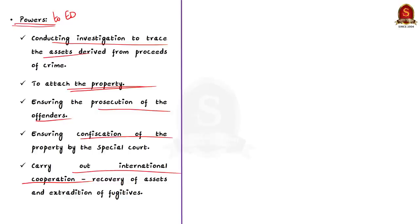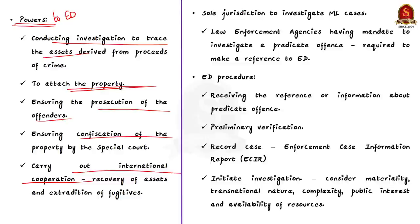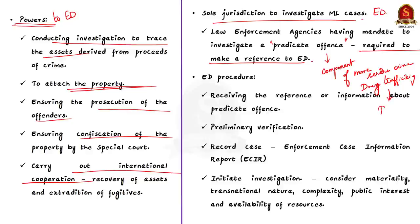The Prevention of Money Laundering Act provides enormous powers to ED. The power to conduct investigation to trace the assets, the power to provisionally attach the property, duty to ensure the prosecution of offenders and confiscation of property, and international cooperation with competent authorities. The most important fact to remember is in India, ED has the sole jurisdiction to investigate the money laundering cases. When law enforcement agencies have responsibility to investigate a predicate offense, they are required to make a reference to ED. For example, predicate offense of drug trafficking can generate revenue which can be laundered.